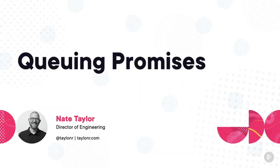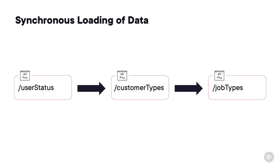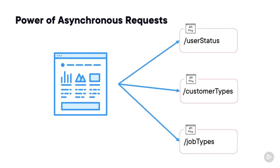Have you ever needed several functions to run independent of each other but you couldn't continue until they were all complete? That's a use case that promises excel at. One of the first large-scale applications I wrote using JavaScript required a lot of metadata — users, customers, jobs, and more, each with their own statuses and types. I didn't want to load user metadata, then customer metadata, then job metadata sequentially because that data wasn't related. I wanted to batch up all my calls, fire them off all at once, and then move on once they all came back. With promises you can still tell the code not to continue until all of that data comes back.